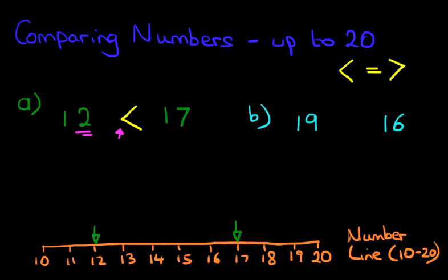Let's have a look at our number line. Where is number 19? It is over here. And where is number 16? It is over here. So 19 is more than 16. 19 is more than 16. So the arrow has to go this way. 19 is more than 16.